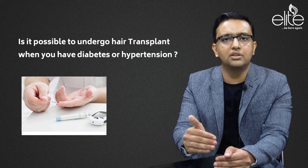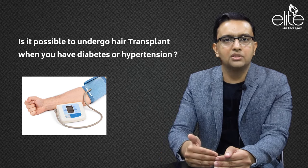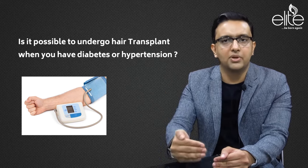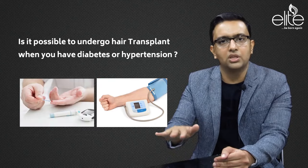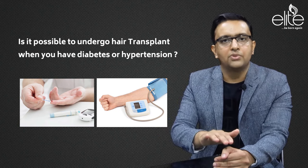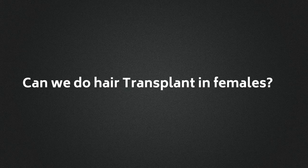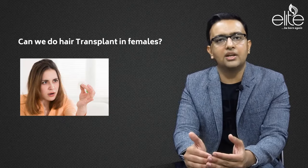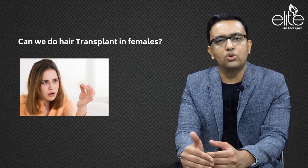Does diabetes or hypertension affect hair transplant? Can it be done? Does the result vary? Diabetes or hypertension is not a contraindication for hair transplant, but we need to control it. There are specific measures to be taken before surgery — we need to control blood sugar and blood pressure preoperatively, monitor them intraoperatively and postoperatively. If we control all these parameters, the results are going to be similar to other individuals, and we have achieved definitely satisfactory results in our center.